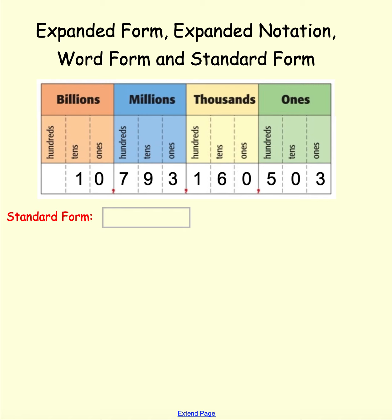This is a review of expanded form, expanded notation, word form, and standard form. On the place value chart, I have put in some digits going all the way out to the 10 billions place. In standard form, that's just copying it from the place value chart.